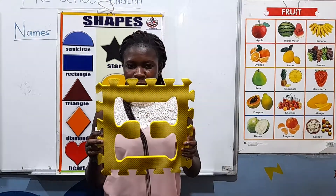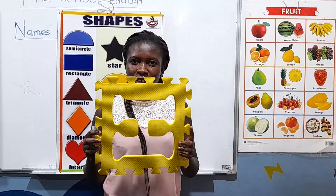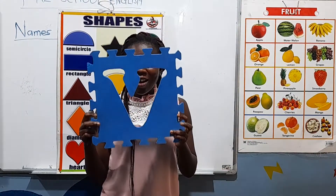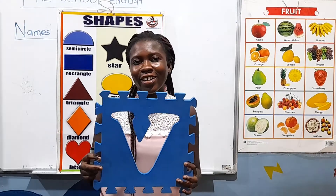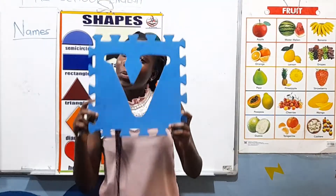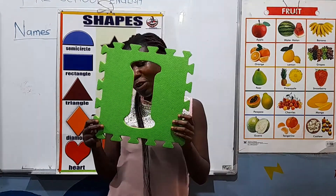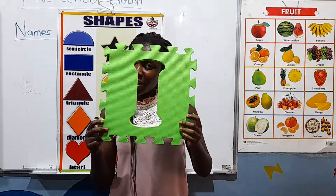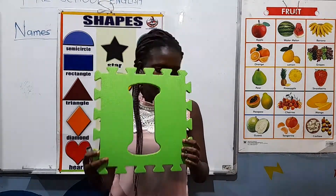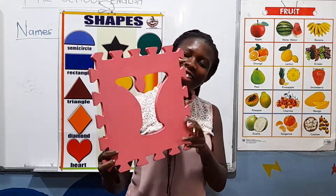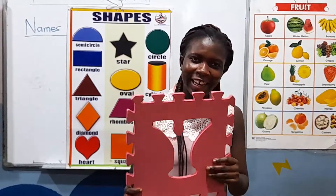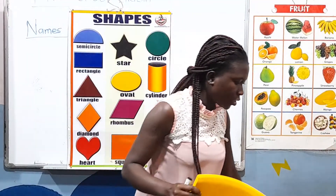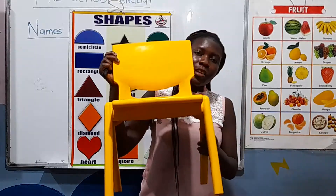Now let's look at some of the colors here. When you look at this object, the color is yellow. This one also has a blue color. This one also is a green color. And this color here is a pink color.